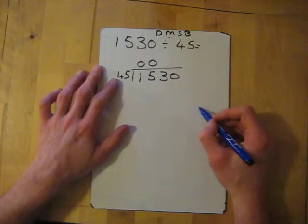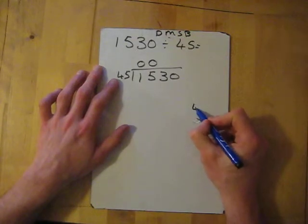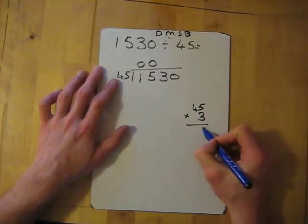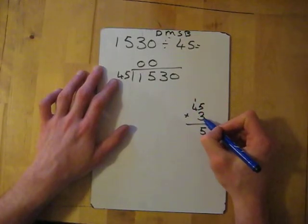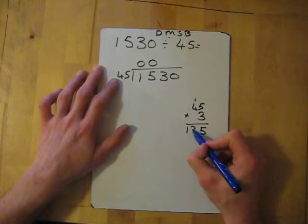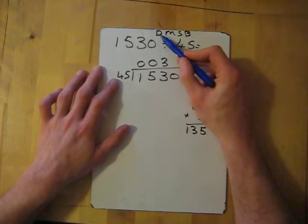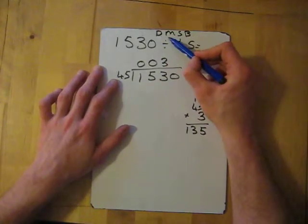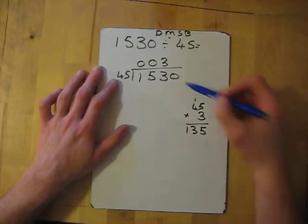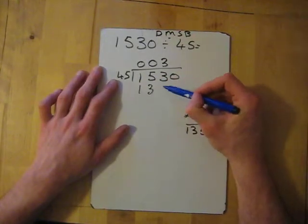So I'm going to try 3 times 45. 3 times 5 is 15, 3 times 4 is 12, and the 1 is 13, so that's 135. It fits in 3 times. So we divided, then we need to multiply. 3 times 45 was 135, so write 135 below.